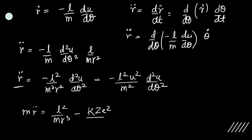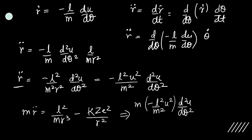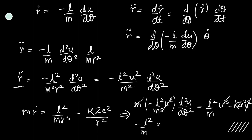Substituting R̈ into the equation mR̈ = -L²/(mR³) + KZe²/R², and replacing 1/R with u throughout, we substitute R̈ = -(L²u²/m²)(d²u/dθ²), and R³ = 1/u³, R² = 1/u². After simplification, we arrive at: -(L²/m)(d²u/dθ²) = (L²/m)u - KZe².